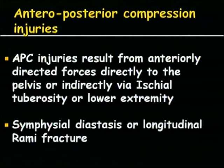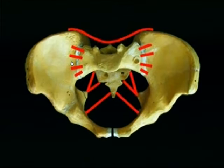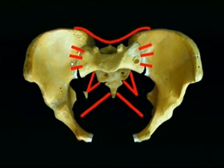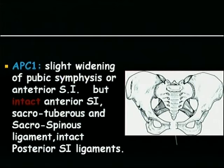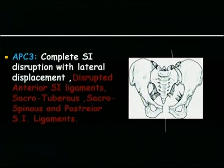Anteroposterior compression (APC) injuries result from a direct force applied from the front, causing pubic symphysis diastasis. When you see the symphysis pubis opened up from the front, there is breakage of the ligaments — sacrotuberous, sacrospinous, and anterior longitudinal ligaments — but in APC the posterior sacroiliac ligament remains stable. APC1 has intact posterior SI joint ligaments, intact anterior sacroiliac, sacrotuberous, and sacrospinous ligaments, making it quite stable. APC2 has everything disrupted except the posterior SI joint. APC3 involves complete SI joint disruption with lateral displacement, which is very unstable and the patient can bleed to death.